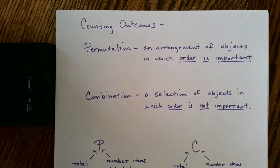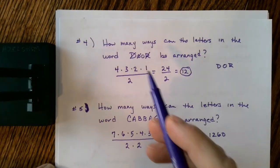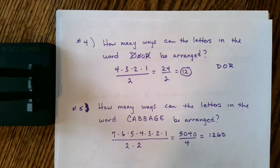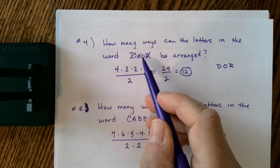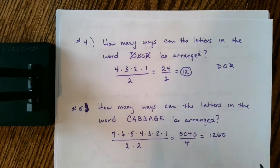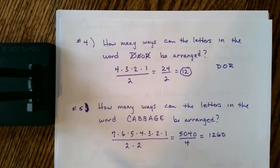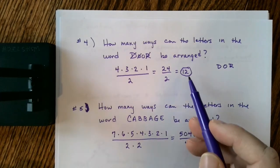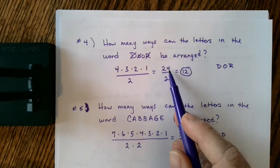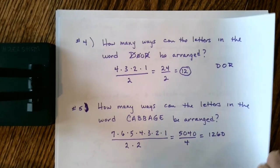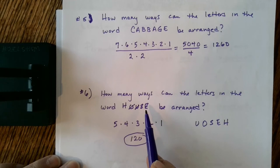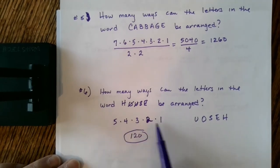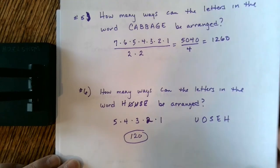Something else from our first video had to do with rearranging letters in a word — the word 'door' for example. We had two O's in the word 'door,' and because it becomes arbitrary which O we're picking, we had to divide that out so the total number of possible arrangements decreased from 24 down to 12. Whereas with the word 'house' there were no repeating letters, so we ended up with a simple 5 factorial, which is 120 possible outcomes.